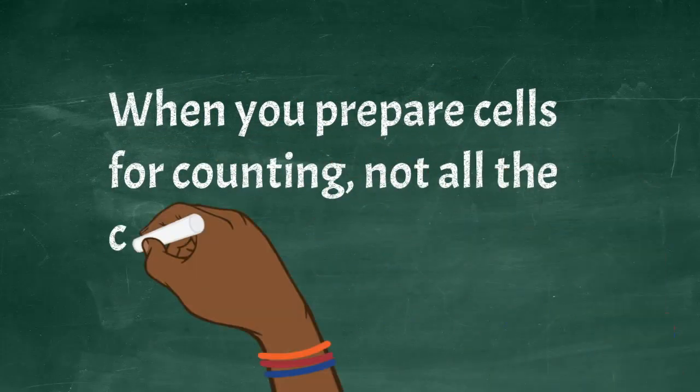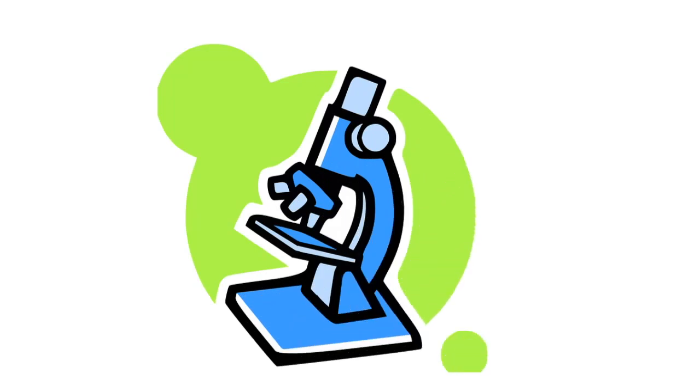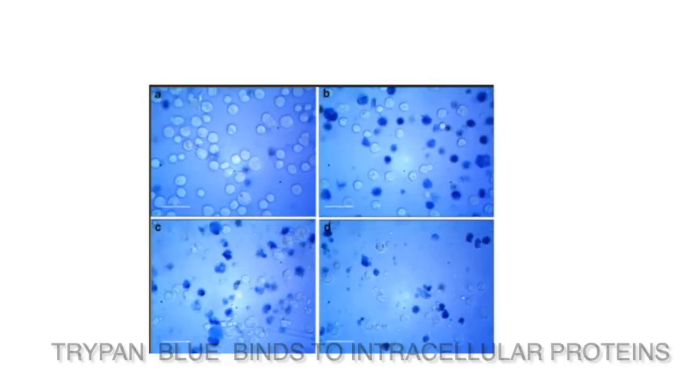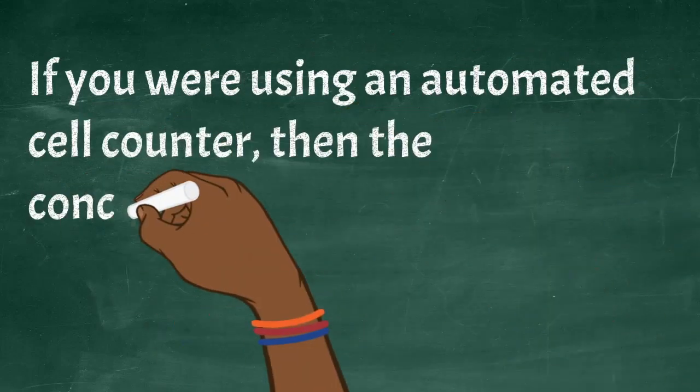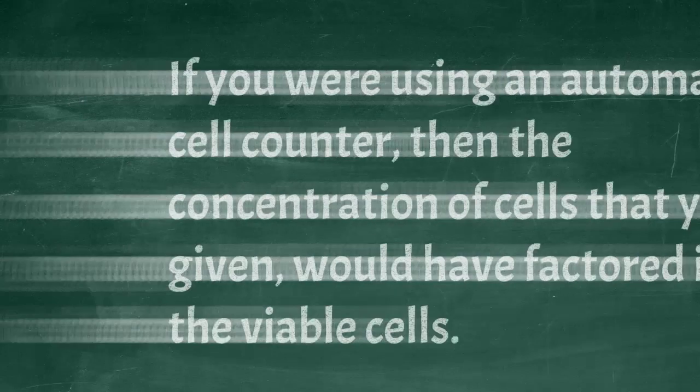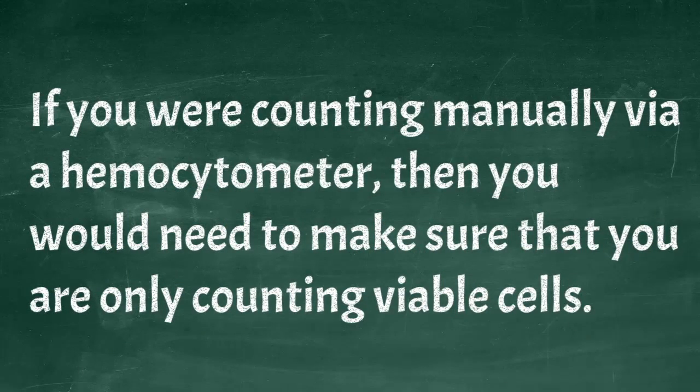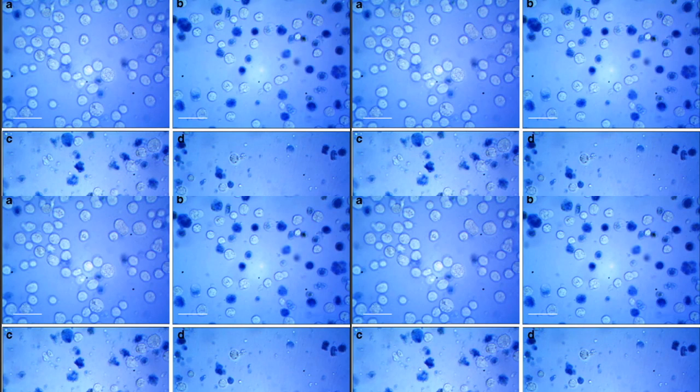When you prepare cells for counting, not all the cells will be alive. This is referred to as cell viability. In your routine counting, you will take note of the percent viable cells. When using an automated cell counter, the concentration of cells you are given would have already factored in only the viable cells. But if you're counting manually via a hemocytometer, you would need to make sure you are counting only viable cells. This would involve you adding a cell staining reagent such as trypan blue, and when you're counting you ignore all the cells that are stained blue. These blue cells are dead.